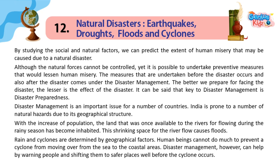By studying the social and natural factors, we can predict the extent of human misery that may be caused due to a natural disaster. Although the natural forces cannot be controlled, it is possible to undertake preventive measures that would lessen human misery. The measures undertaken before and after a disaster comes under disaster management. The better we prepare for facing the disaster, the lesser is its effect. It can be said that the key to disaster management is disaster preparedness.